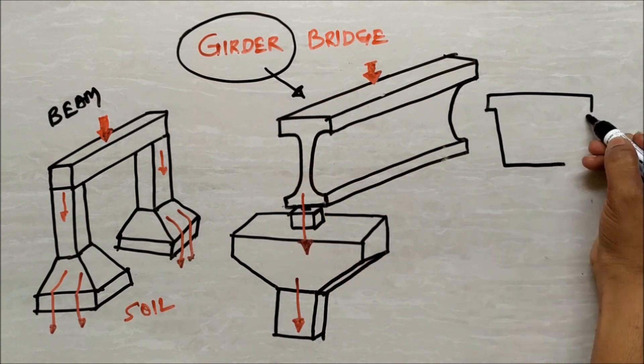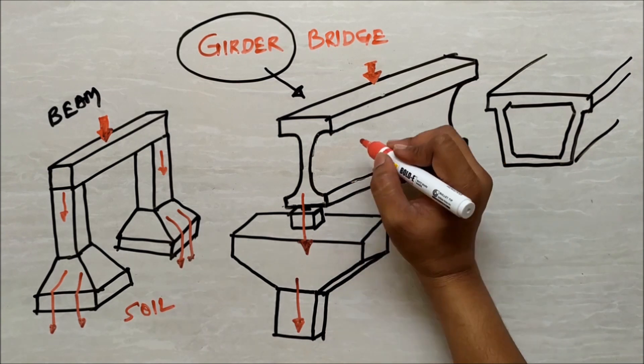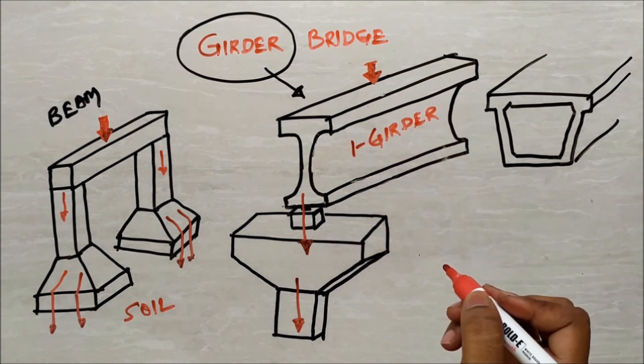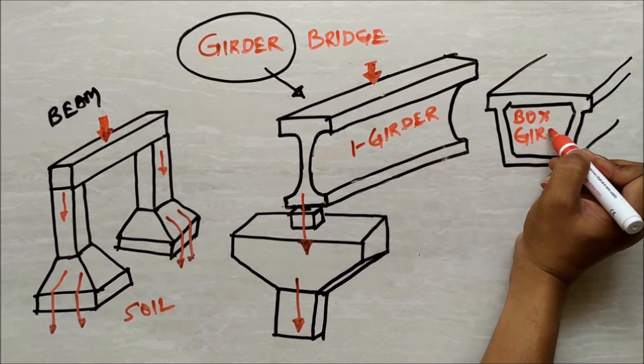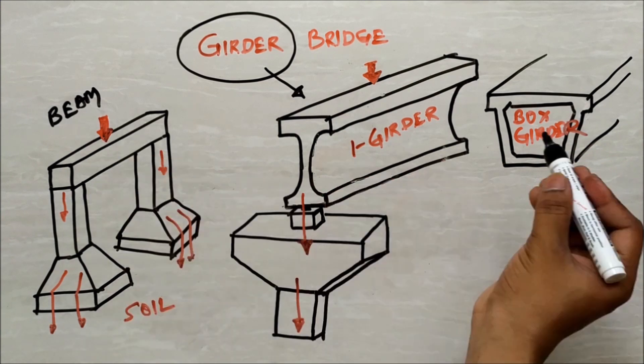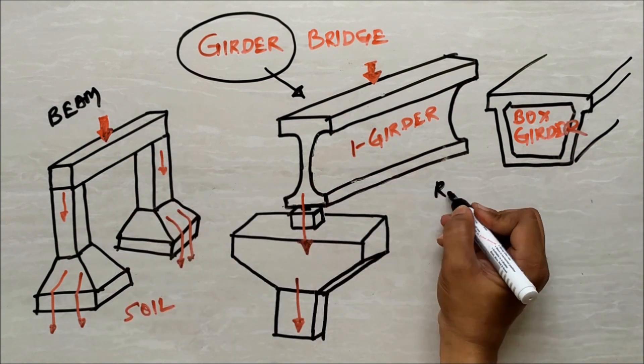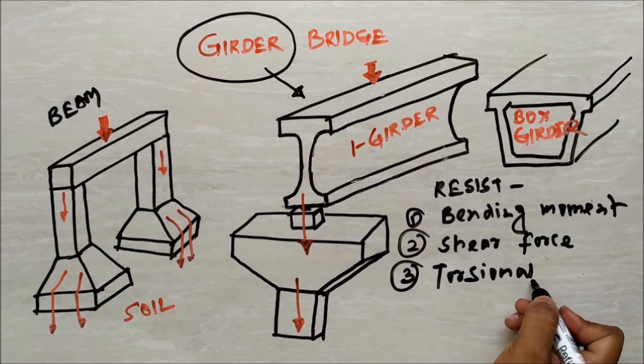Girders are mainly having I-shaped and box-shaped cross section. The girder having I-shaped cross section is called as I girder and having box-shaped cross section is called as a box girder. Functionally, beam and girder are having same principle to resist bending moment, shear force and torsional resistance.